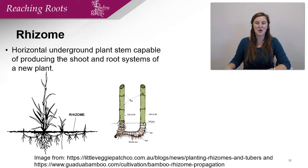The first thing that we'll go over is a rhizome. A rhizome is a horizontal underground plant stem that's capable of producing the shoot and root system of a new plant.